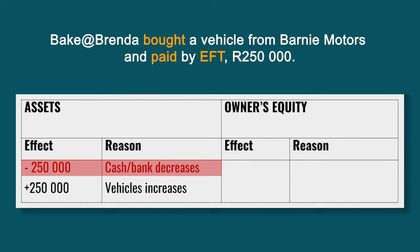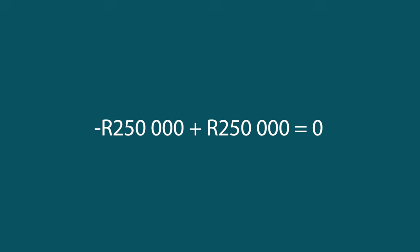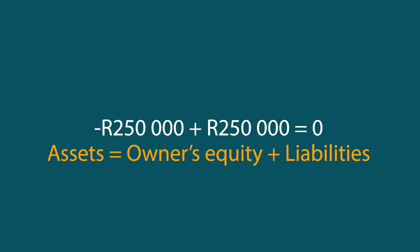In the accounting equation: the asset Cash or Bank decreases by R250,000 because the business bought a vehicle. The asset Vehicles increases by R250,000 because you bought a vehicle. So: minus R250,000 plus R250,000 equals zero, and Owner's Equity equals zero — which means Assets equal Owner's Equity.